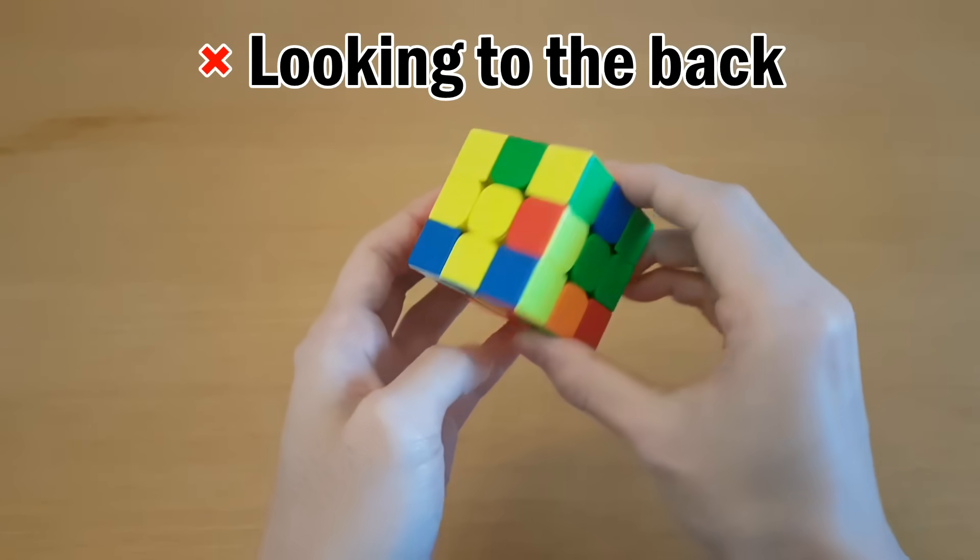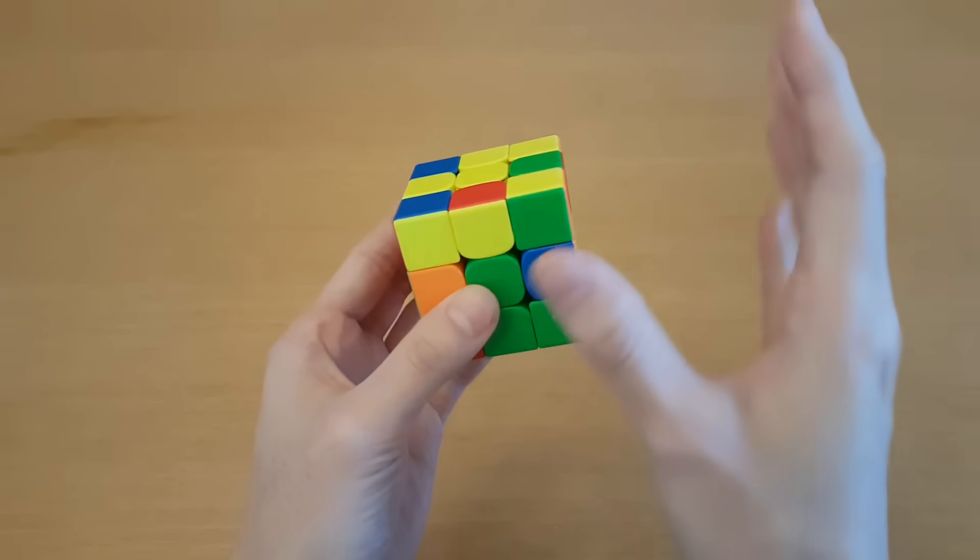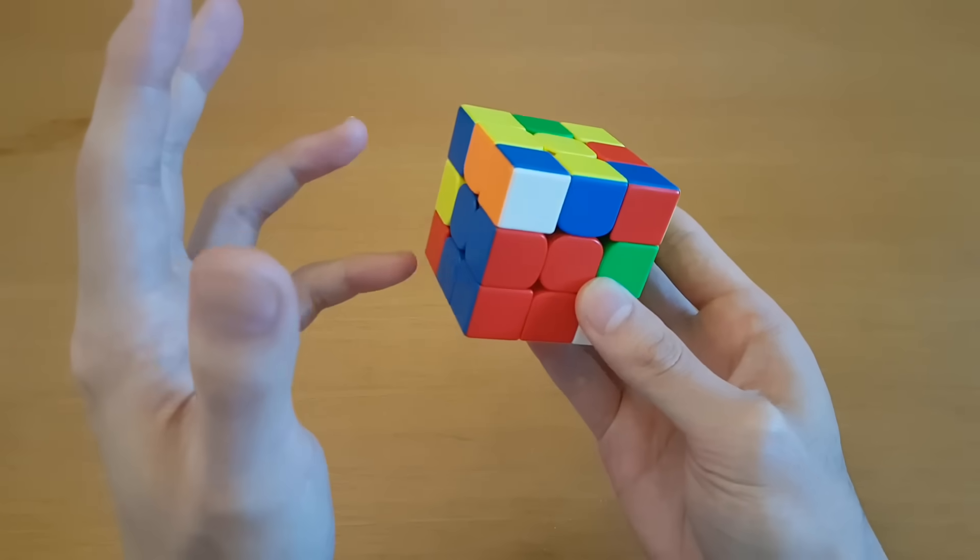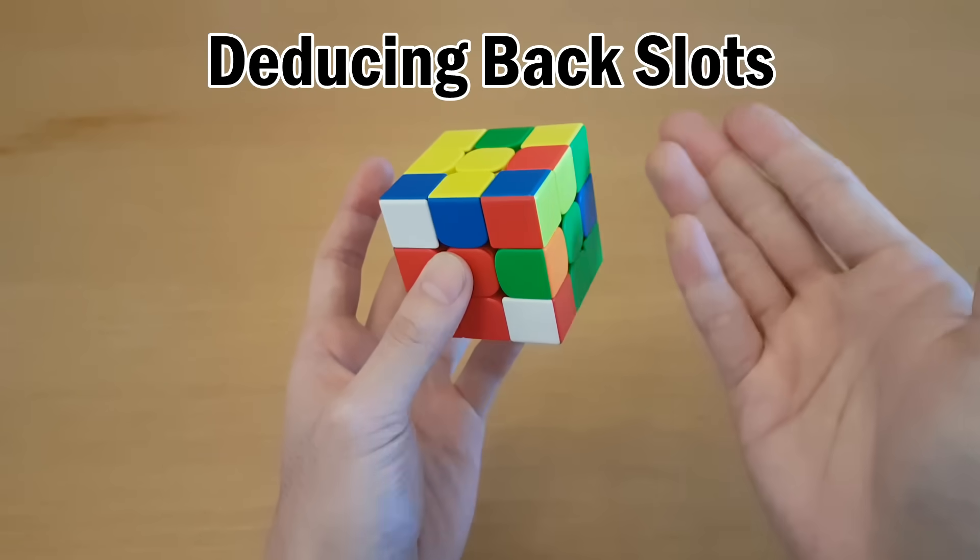Looking to the back requires you to stop what you're doing and pause, and a cube rotation of course is a pause. So both of these should be avoided, and it's best if you could figure out where the other piece is without having to look at the back. This is called deducing backslots, because you're not actually going to look at the back. You're going to use all the other information you have to figure out what must be there.